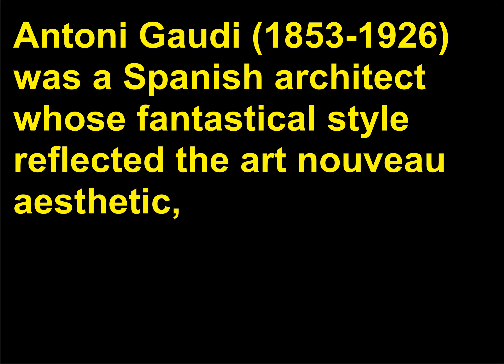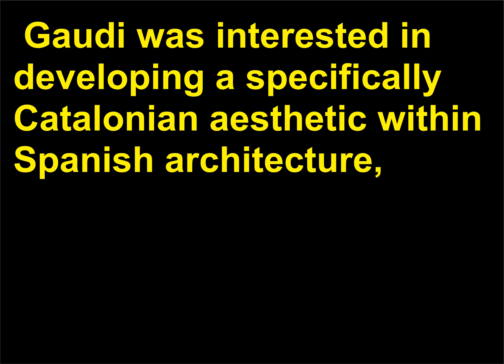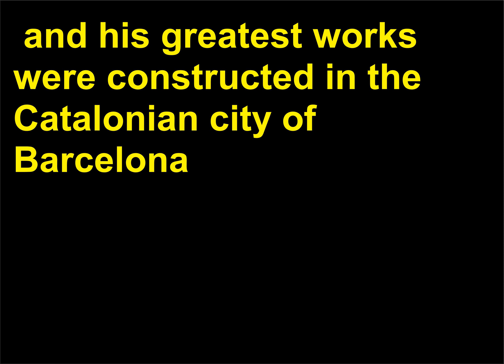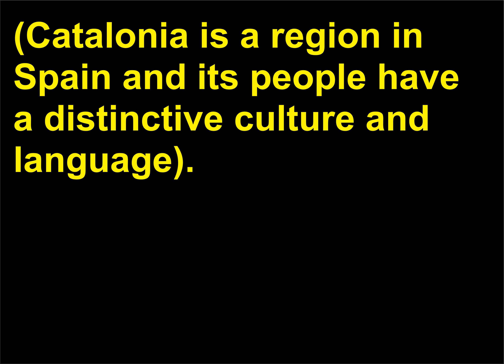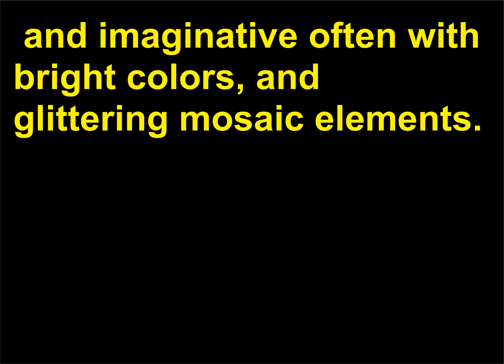Who was Antoni Gaudí? Antoni Gaudí (1853–1926) was a Spanish architect whose fantastical style reflected the Art Nouveau aesthetic, and is most closely associated with the Spanish movement called Modernismo. Gaudí was interested in developing a specifically Catalonian aesthetic within Spanish architecture, and his greatest works were constructed in the Catalonian city of Barcelona. Catalonia is a region in Spain and its people have a distinctive culture and language. Gaudí's buildings are highly decorative, fluid, and imaginative, often with bright colors and glittering mosaic elements.